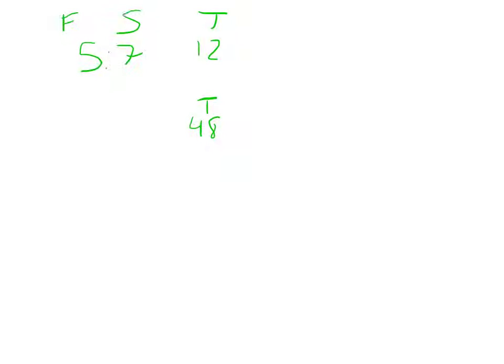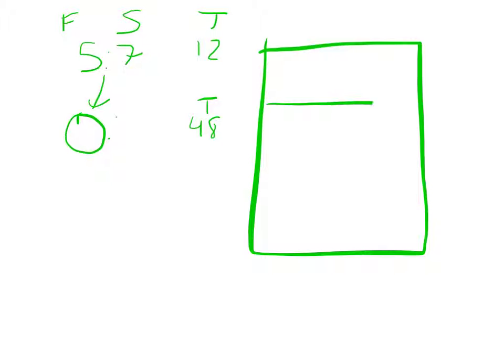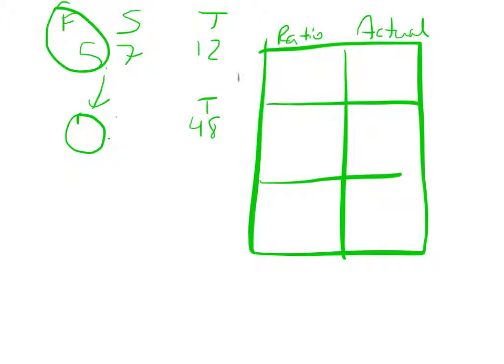And we want to know how many football players there were. So the first number here, we want to know. So let's go ahead and make our ratio box again. Divide it into three sections. Remember, this is the ratio side, and this is the actual side. The first number was football, and the second one was soccer. And this will always be total. So 5 football, 7 soccer makes a total of 12 for our ratio. The actual total in the room was 48.